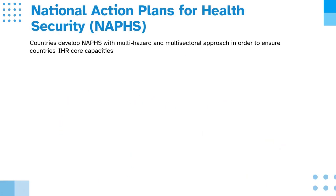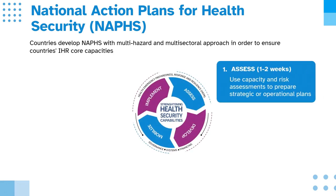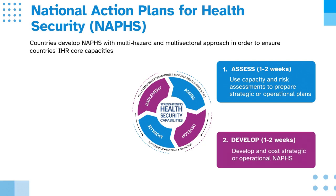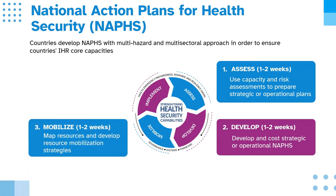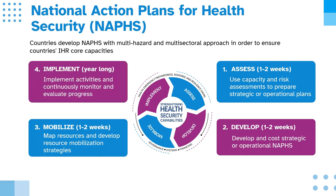Countries develop national action plans for health security, or NAPS, with multi-hazard and multi-sectoral approaches in order to ensure countries' IHR core capacities. The steps are: one, assess — use capacity and risk assessments to prepare strategic or operational plans; two, develop — develop and cost strategic or operational NAPS; three, mobilize — map resources and develop resource mobilization strategies; four, implement — implement activities and continuously monitor and evaluate progress.